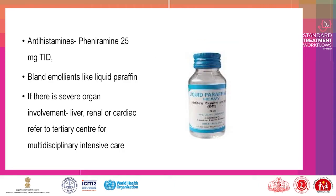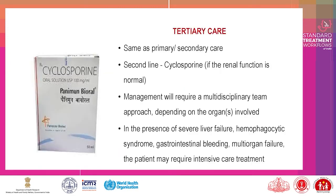Treatment — If no evidence of major organ involvement, first-line treatment is systemic steroids: prednisolone 0.5–2 mg per kg with slow tapering after symptoms and signs resolve. Antihistamines such as pheniramine 25 mg TID and bland emollients like liquid paraffin. If there is severe organ involvement — liver, renal, or cardiac — refer to a tertiary center for multidisciplinary intensive care.